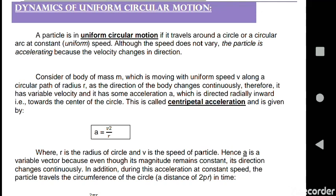Hence a is a variable vector because even though its magnitude remains constant, its direction changes continuously. Because the body is moving in a circle in a curved path, in every curve path the body tends to rotate itself in a circular motion.